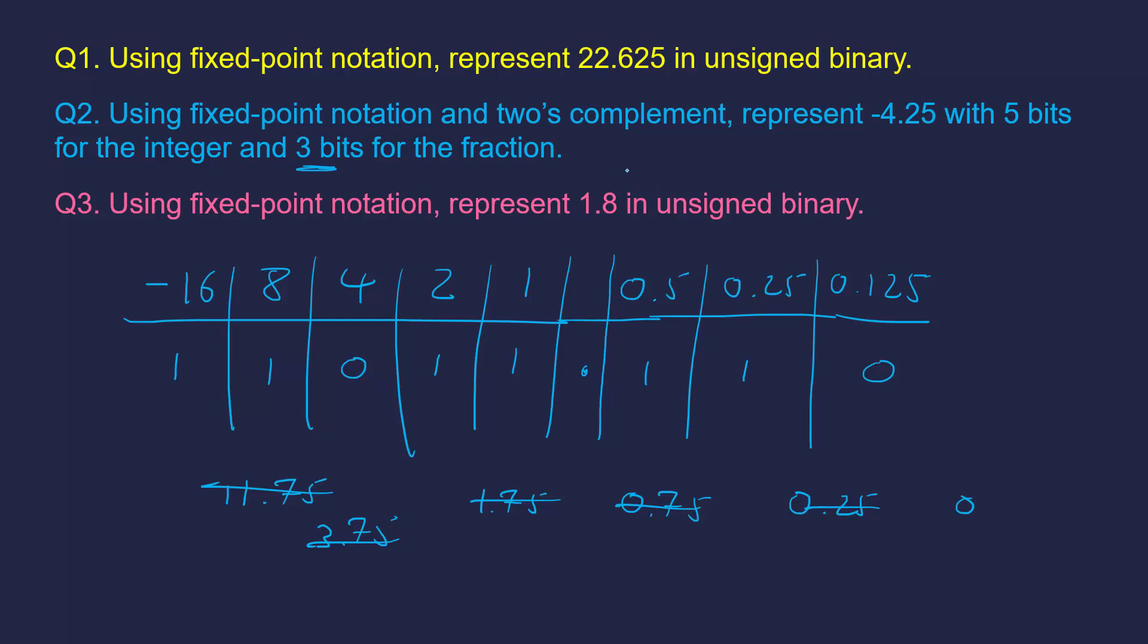It's a tiny bit more tricky in 2's complement, but not massively. So the answer here would be 1, 1, 0, 1, 1, then your binary point, then 1, 1, 0.